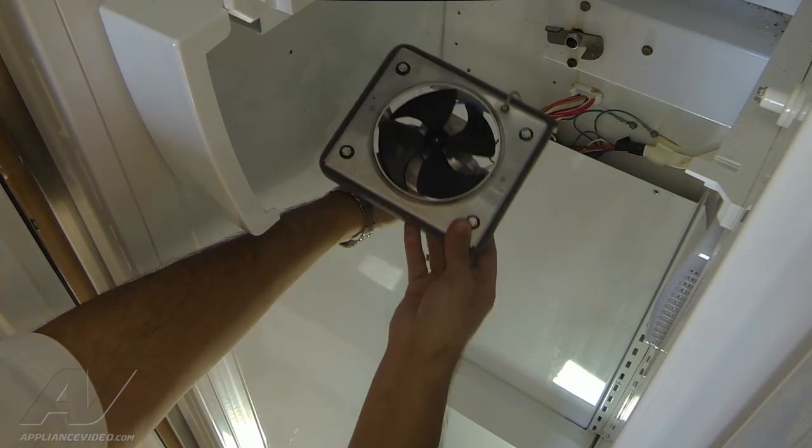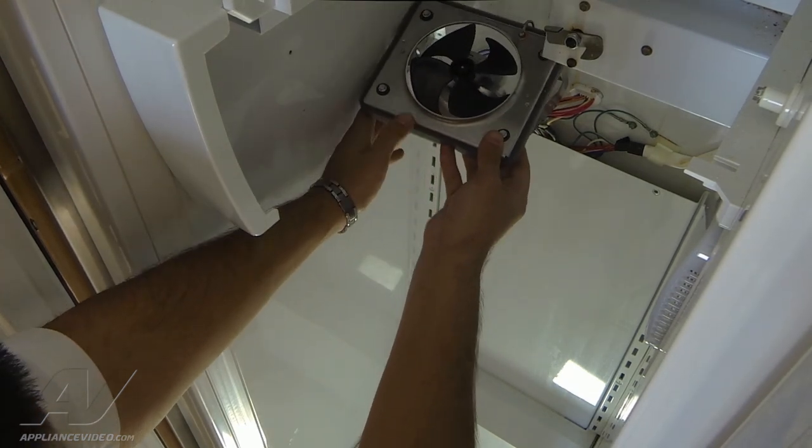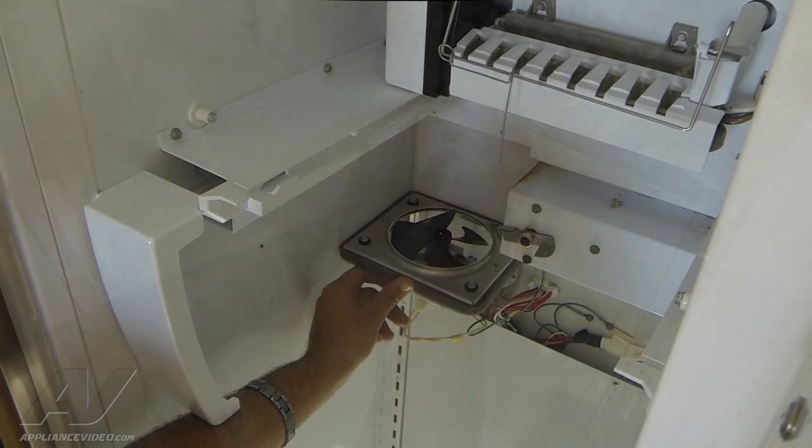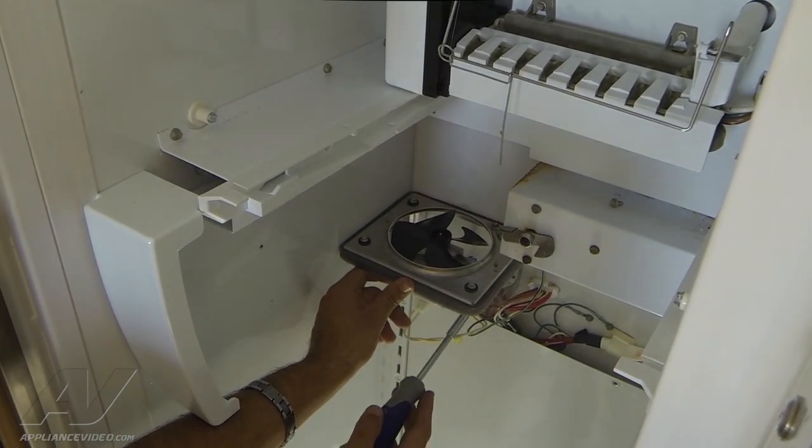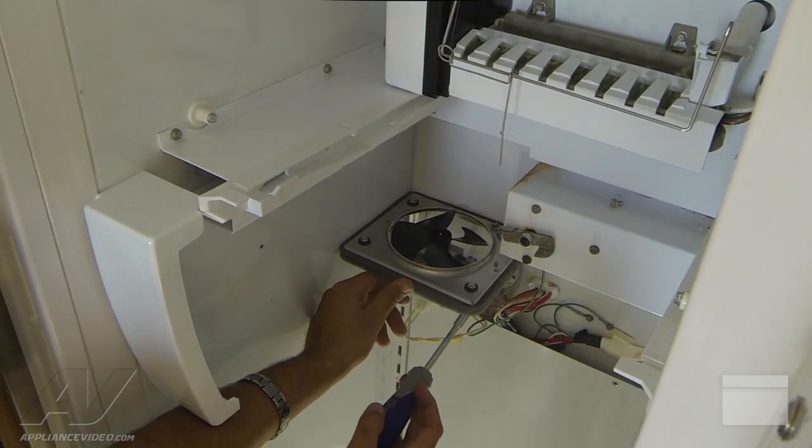Once that's done, we can position the fan bracket to the screw holes where they're supposed to go and start reinstalling the quarter inch screws we removed earlier.